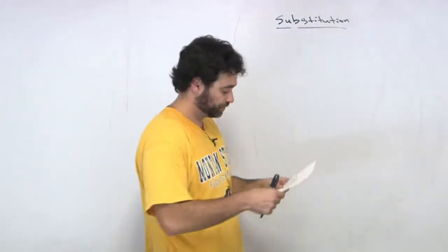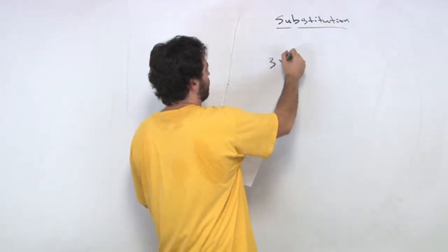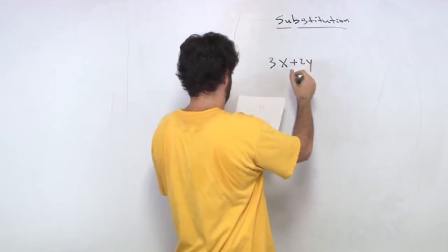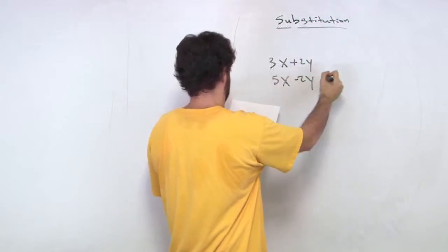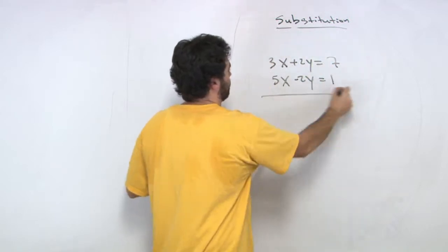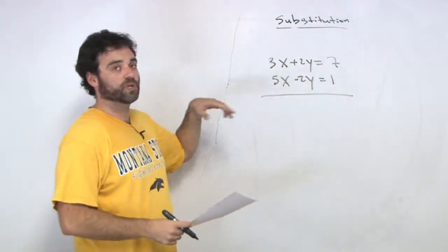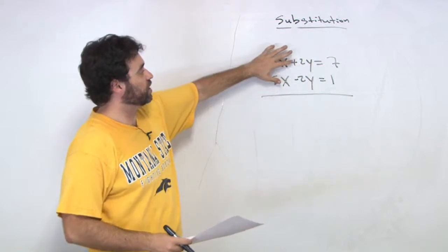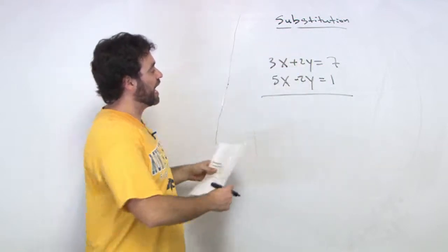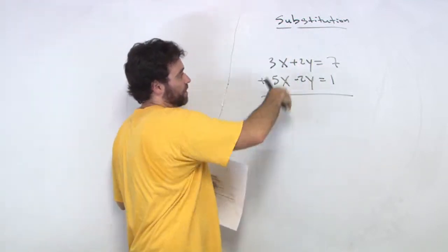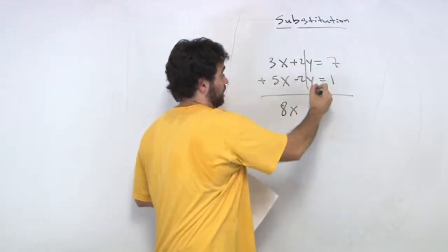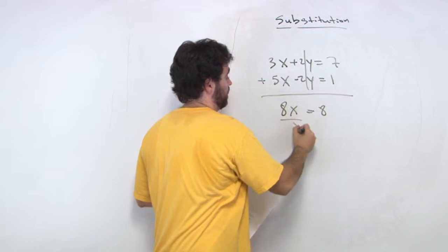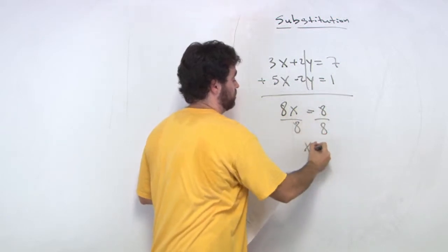So we're talking about the addition method. We have 3x plus 2y, and 5x minus 2y equals 1, equals 7. Since these are systems too, we don't have to isolate one of these, because this is a positive 2 minus. We're going to add the equation to top and bottom, so we get 8x. These cancels, equals 8, divide by 8, x is equal to 1.